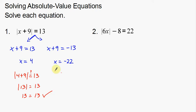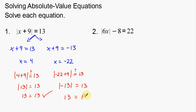Let's try negative 22. The absolute value of negative 22 plus 9 — does that equal 13? Negative 22 and positive 9 makes negative 13, and the absolute value of negative 13 is 13. So it does work. We have two numbers that both work in this equation because absolute value is a distance — the absolute value of 13 and of negative 13 are the same thing.